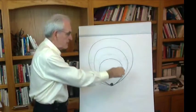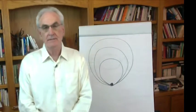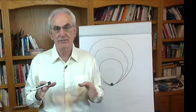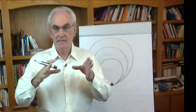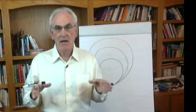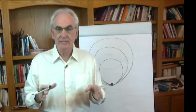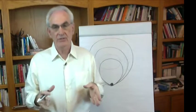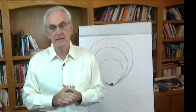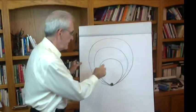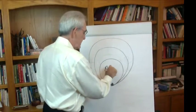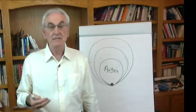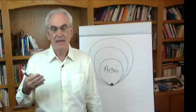If we look, this first inner circle represents the conversations we have that produce action or that don't. It's the action space. How effective are you, your team, your company, your organization, your community in producing the action you're looking for to create the future that you care about? And so this is action, but based on what we learned in our last step, these are the conversations that generate action.